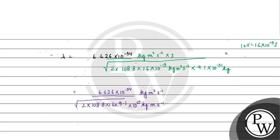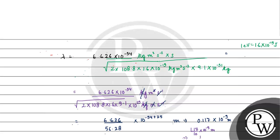So we have 6.626 divided by 56.28, giving approximately 0.117, with 10⁻³⁴ divided by 10⁻²⁵ = 10⁻⁹. This gives 0.117 × 10⁻⁹ meters, which equals 1.17 × 10⁻¹⁰ meters.